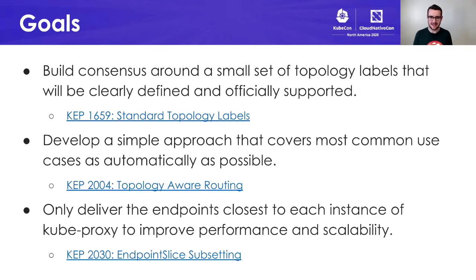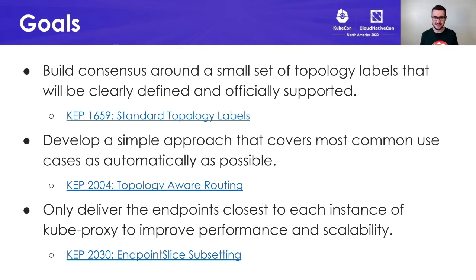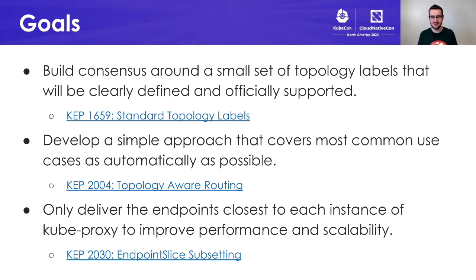So because this is Kubernetes, each one of these goals had an associated KEP. If you're interested in all the details associated with each one of these proposals, I highly recommend you get on GitHub and go to the Kubernetes enhancements repo and look up each one of these KEPs. I'm going to provide a decent overview of each of them in this talk. For example, KEP 2004, the topology aware routing KEP, describes a lot of the different algorithms we considered and provides diagrams to show exactly how they might work.